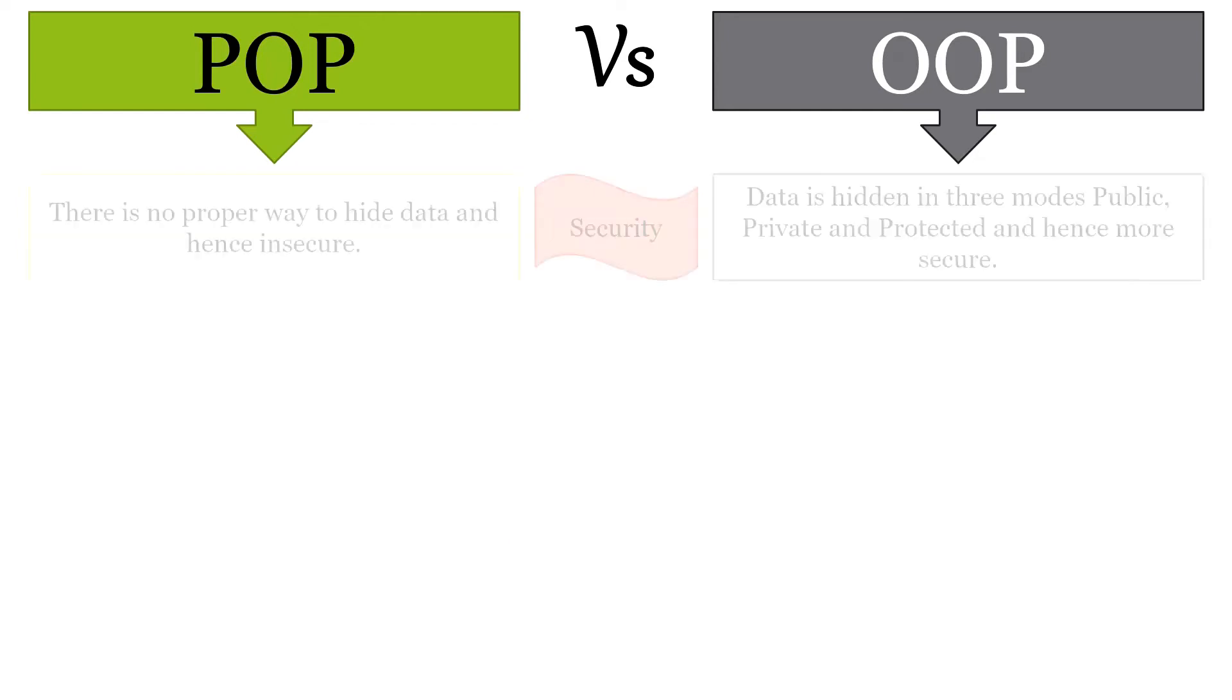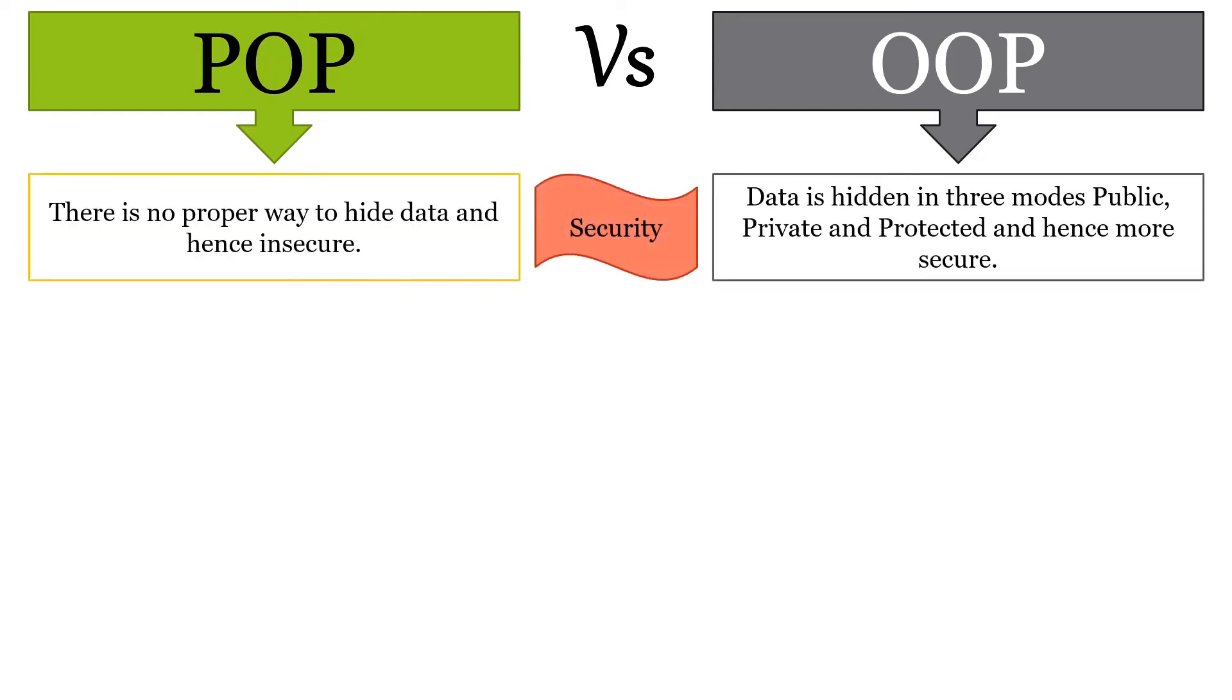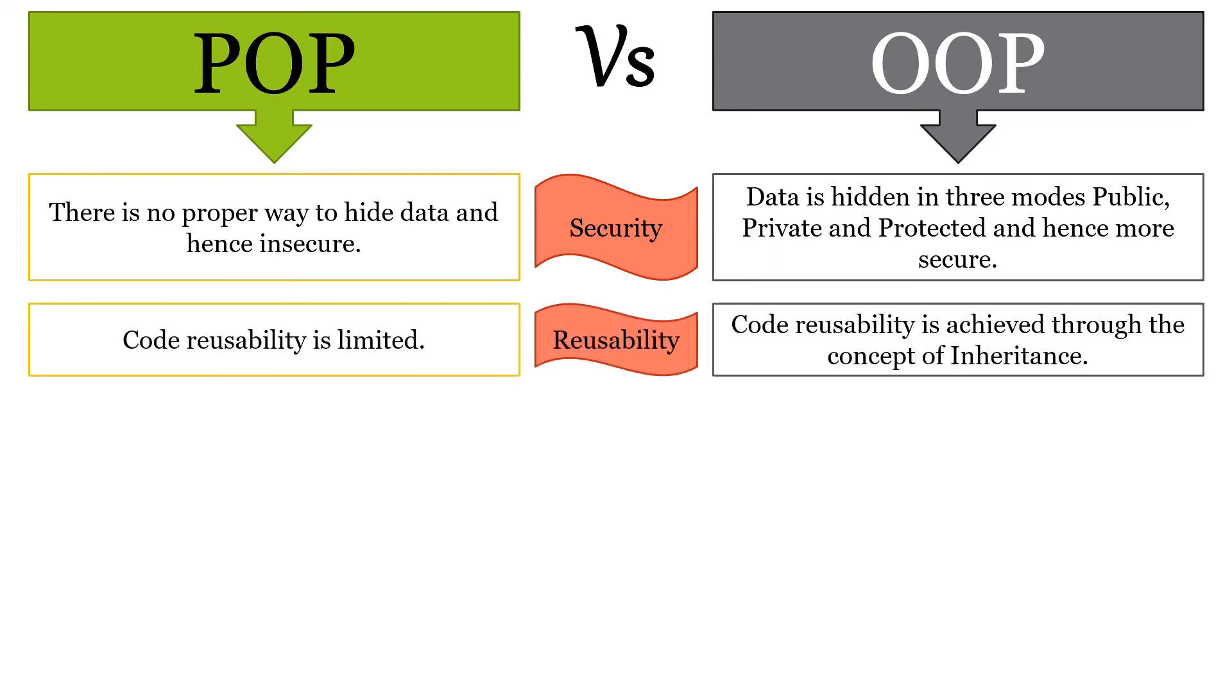In POP, there is no proper way to hide data, hence data is insecure. In OOP, data is hidden in three modes: public, private, and protected, hence data is more secure in OOP. In POP, code reusability is limited whereas in OOP, code reusability is achieved through the concept of inheritance.